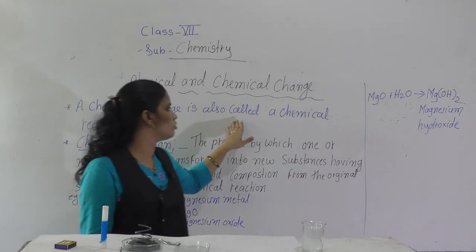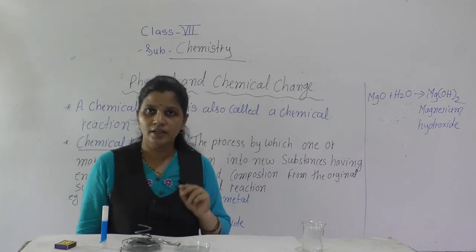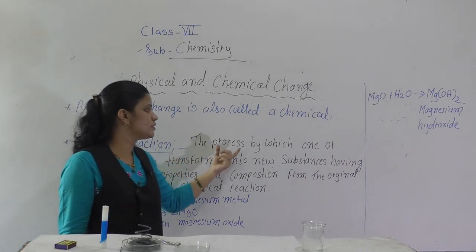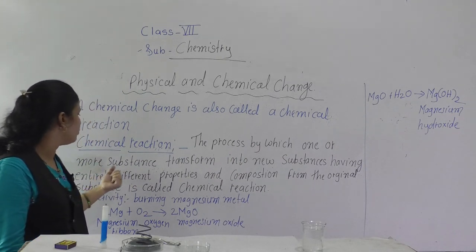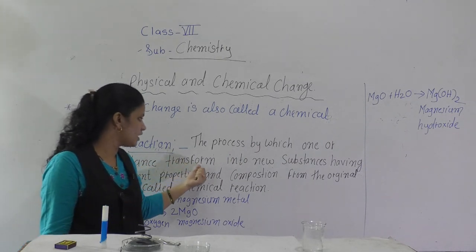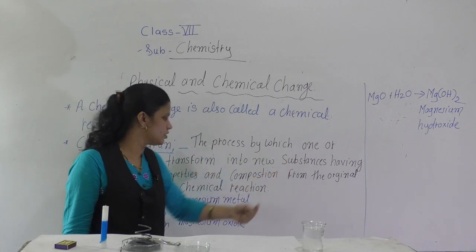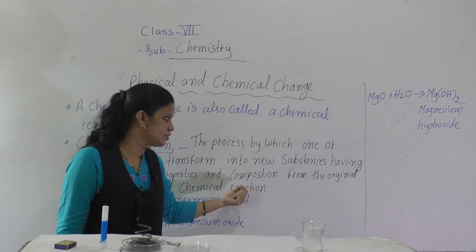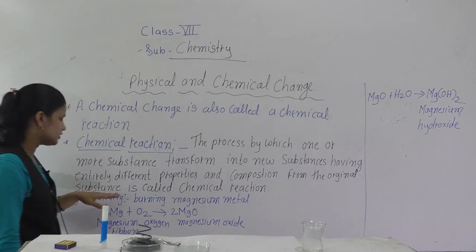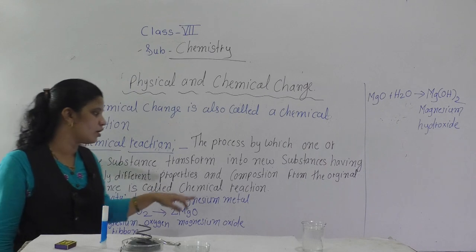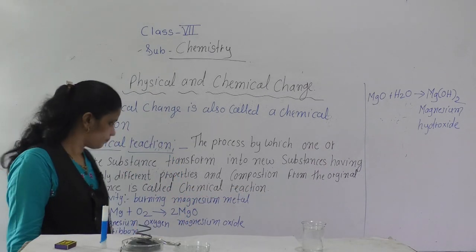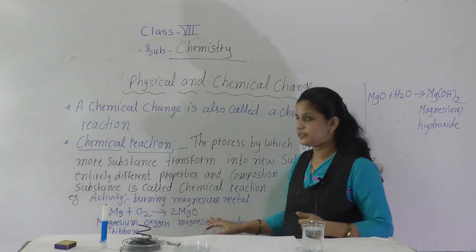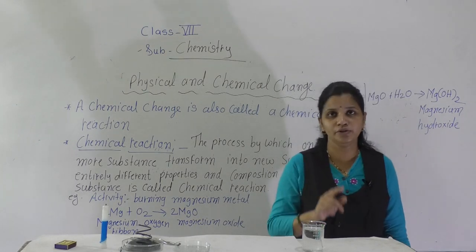Chemical changes are also called chemical reactions. The definition is: a chemical reaction is the process by which one or more substances transform into new substances having different properties and composition from the original substance. This definition is not given in your textbook, so write it in your chemistry notebook.